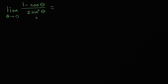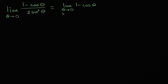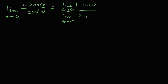Our first temptation is to say this is going to be the same thing as the limit of one minus cosine theta as theta approaches zero, over the limit as theta approaches zero of two sine squared theta.